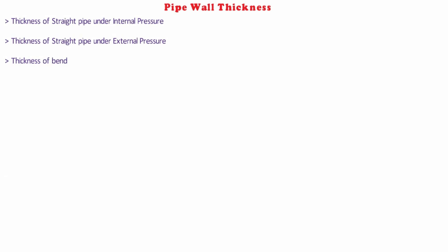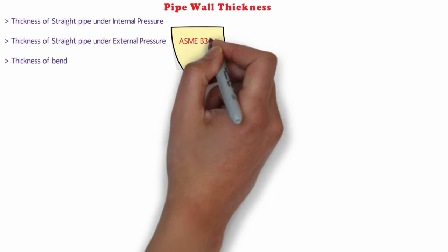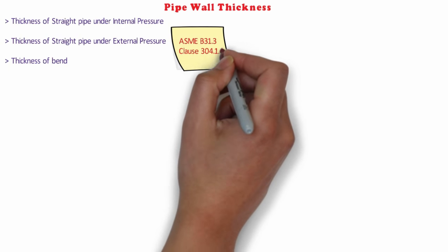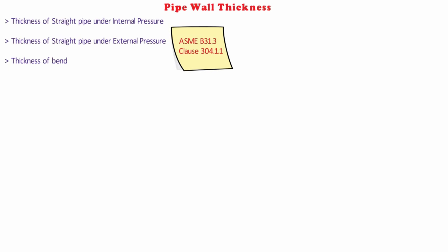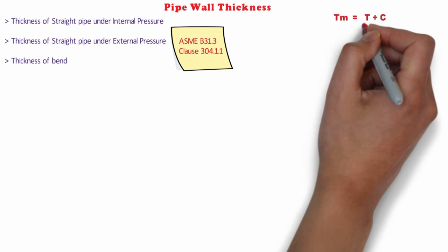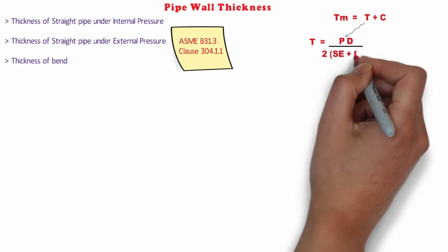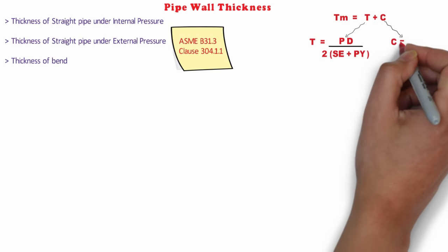Let's see how we can calculate thickness of straight pipe under internal pressure. As per ASME B31.3 process piping code, clause 304.1.1 gives minimum thickness as follows: tm = t + c, where t = PD / (2(SE + PY)) and c = c1 + c2.